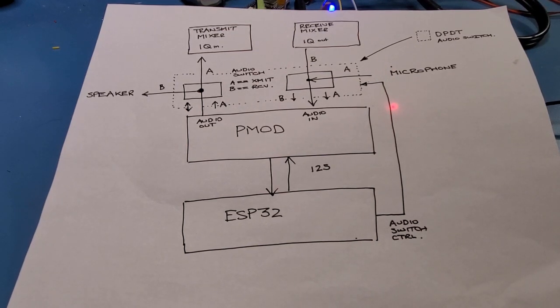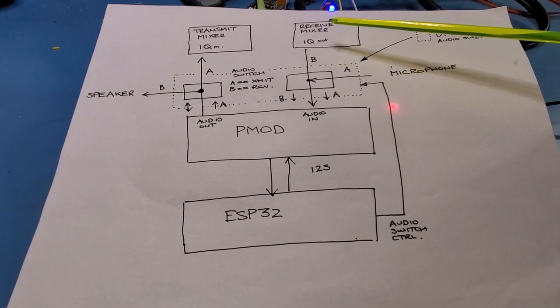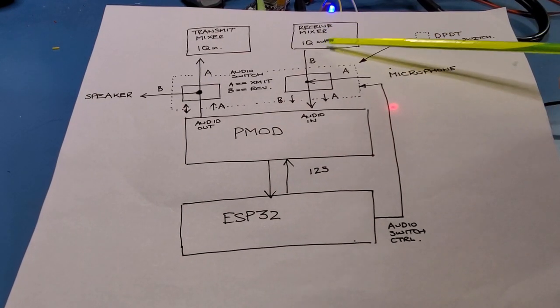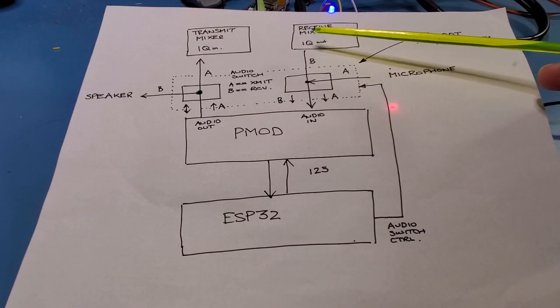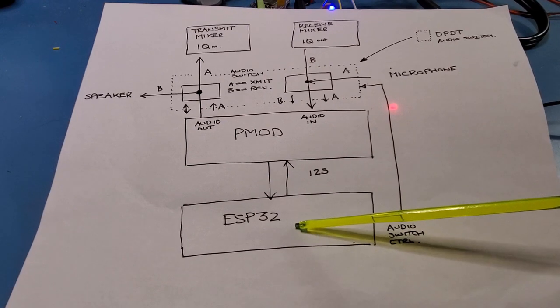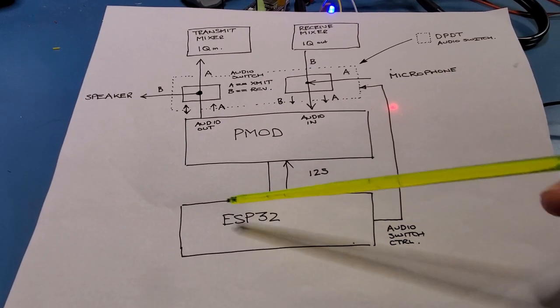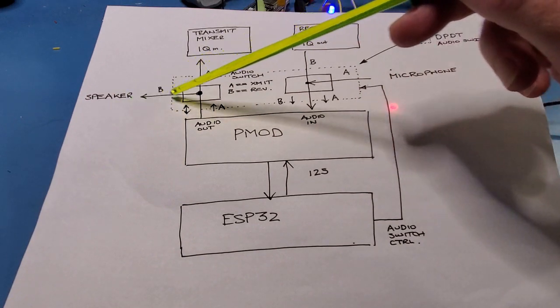Looking at this diagram this is in the transceiver where I need that audio switch and it's because there are two separate audio pathways one for receive and one for transmit. So on receive the stereo audio, the IQ audio from the receive mixer passes through the PMOD board, gets processed in the ESP32 and then gets sent back out and finally out through the speaker.